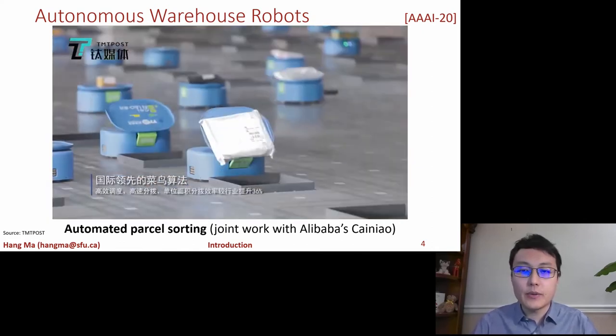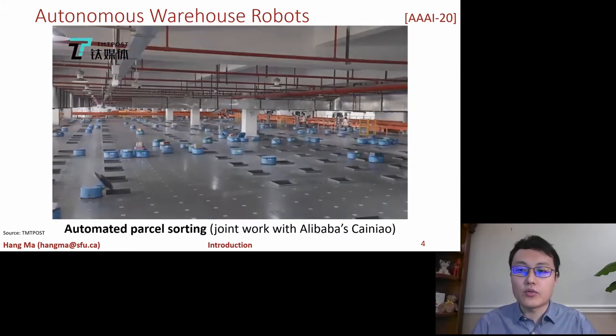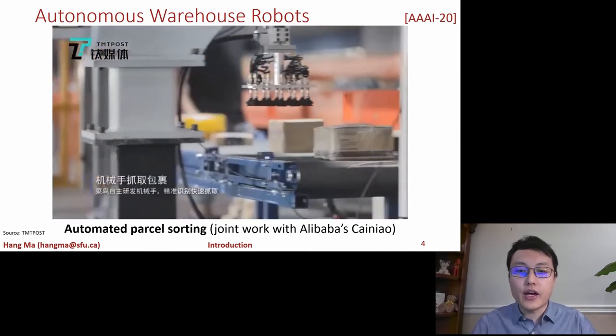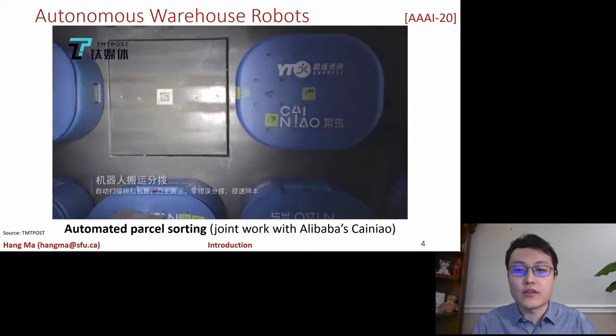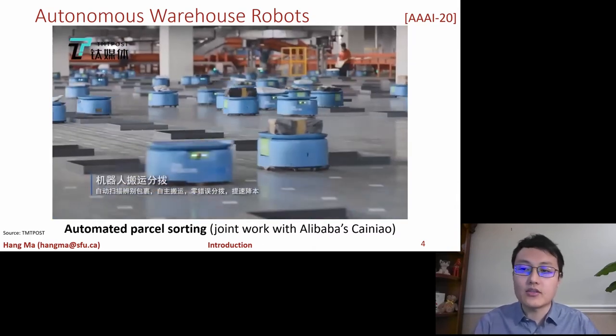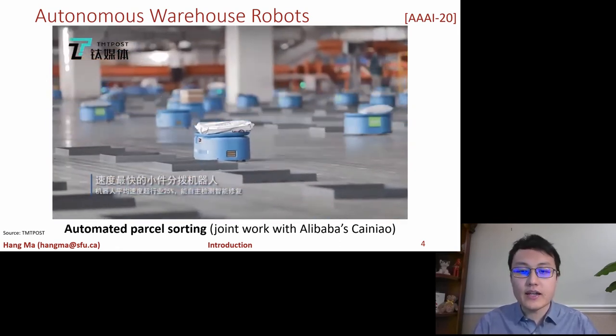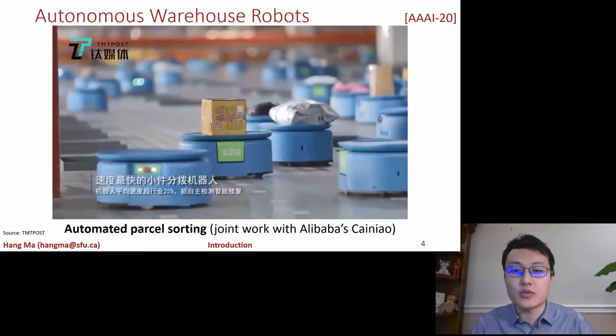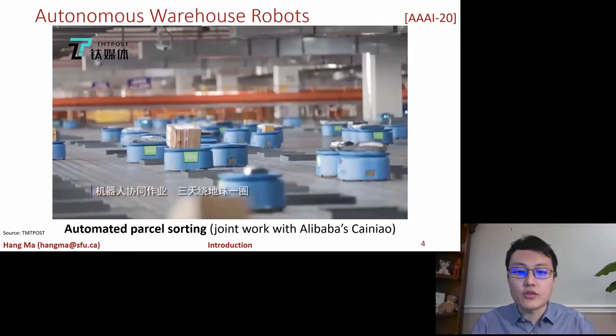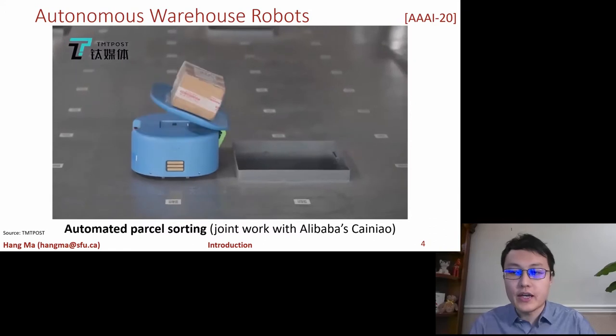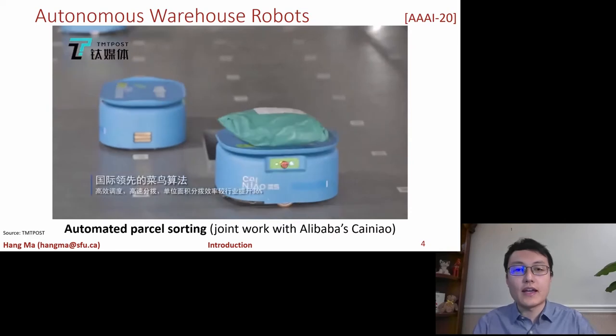Here, a human worker or a scanning machine will scan the delivery address of a parcel and put it onto a robot. The delivery address would be also input to the robot telling the robot which sorting bin on the floor it should deliver the parcel to. Each sorting bin is associated with a certain postal code. It's required that in seconds of computation time, the system needs to make decisions for hundreds of robots about from which station the robot should obtain a parcel for delivery and on which route the robot should navigate to the sorting station and then to the sorting bin.